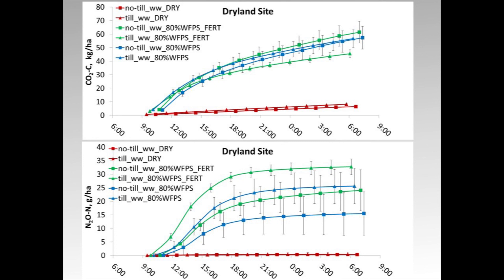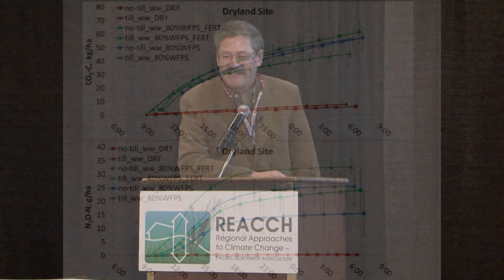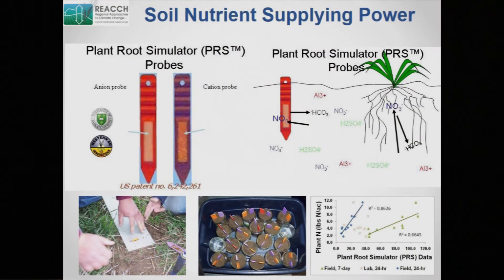Looking at cumulative results, here's the carbon dioxide up top — we see differences in till and no-till. But the carbon dioxide differences weren't so striking; the nitrous oxide differences were. In every case across our dryland sites, the conventional tillage site gave us more nitrous oxide than our no-till site — interestingly enough, despite there being more active carbon in our no-till sites. So this is quite interesting, and we're still working out what some of this might mean.